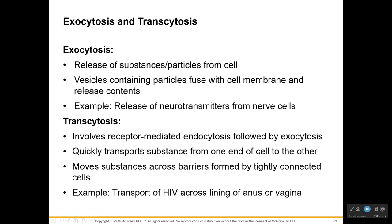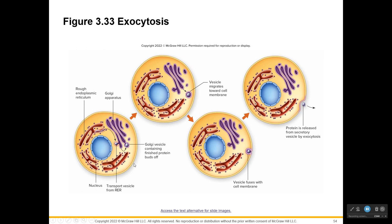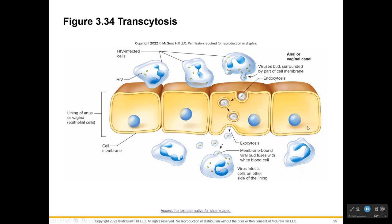Transcytosis is not very common, but it involves receptor-mediated endocytosis immediately followed by exocytosis. Trans means across, and the purpose is to move something from one end of the cell across to the other. We see this happen in HIV, where the virus undergoes endocytosis through epithelial cells — whether anal or vaginal — and crosses to the other side through exocytosis.